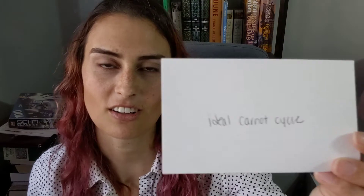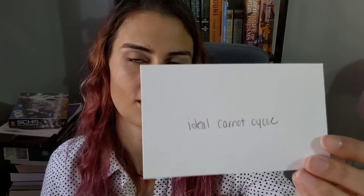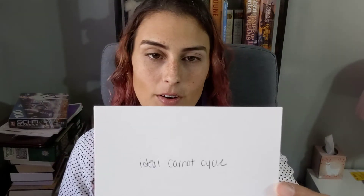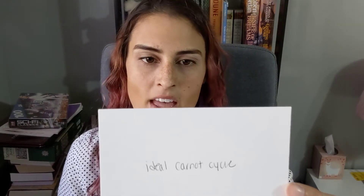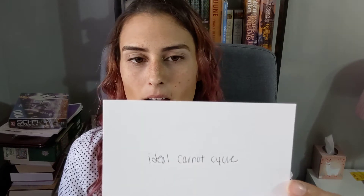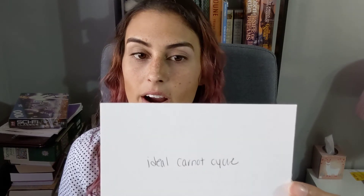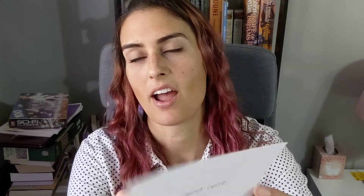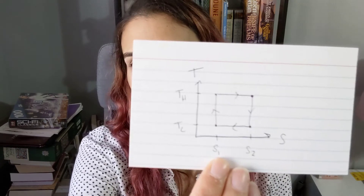The ideal Carnot cycle — this one's actually a drawing — shown in the T-S plane, it's basically a square that goes between two fixed entropies and a hot and a cold temperature.